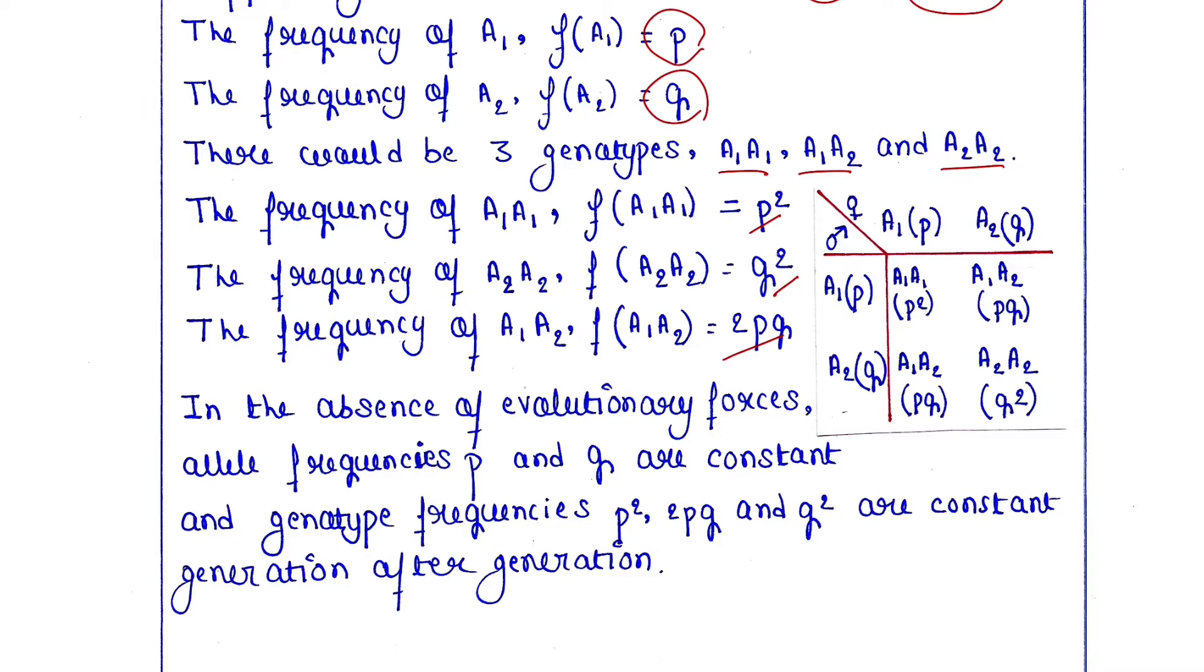Why 2PQ? You can understand from this checkerboard. Here, father and mother, two individuals, are there. Mother is A₁A₂, father is A₁A₂.